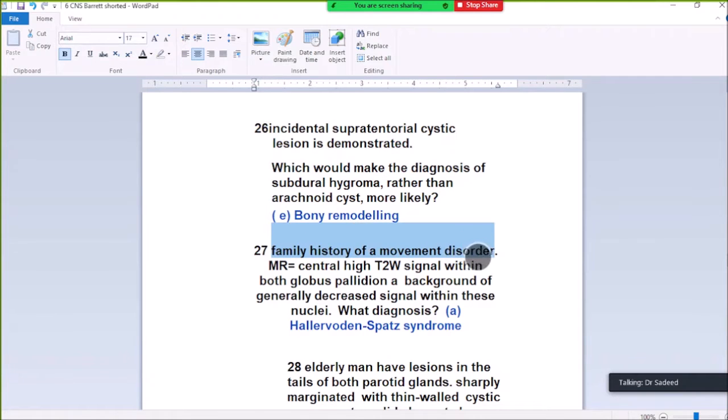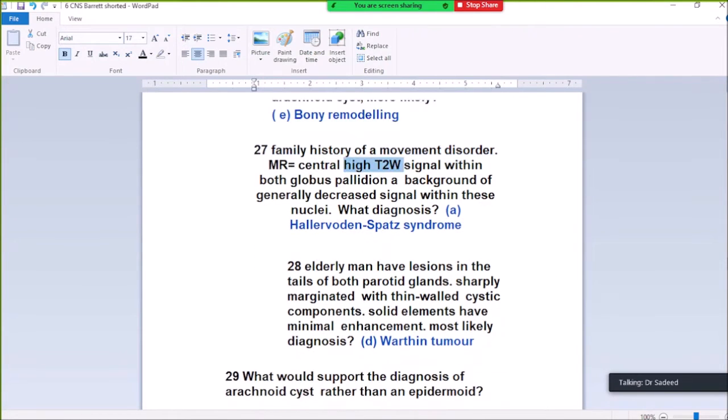Question 27. Family history of movement disorder, MRI shows central high T2 signal within the globus pallidus with background of generally decreased signal within these nuclei. This is the Eye of Tiger sign seen in Hallervorden-Spatz syndrome. Central high signal within globus pallidus, but globus pallidus themselves have low density but central high signal, so Eye of Tiger sign, Hallervorden-Spatz syndrome.